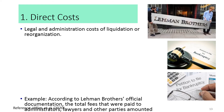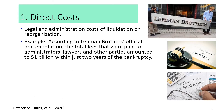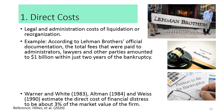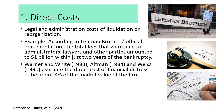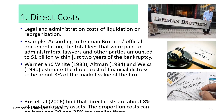For example, the Lehman Brothers bankruptcy in September 2008 was the largest-ever bankruptcy, concerning one of the biggest banks in the world. This bankruptcy followed large write-downs on subprime mortgage assets and a general collapse in interbank credit. Estimates vary on the total cost of the bank's collapse, but a conservative estimate is around $2 billion and likely much higher. According to Lehman Brothers' official documentation, total fees paid to administrators, lawyers, and other parties amounted to $1 billion within just two years of the bankruptcy. Researchers have reported a wide range of direct costs of financial distress — from 3% of the market value of the firm to 20–25% for smaller firms.